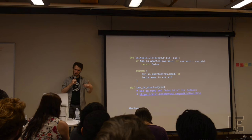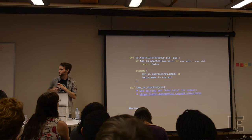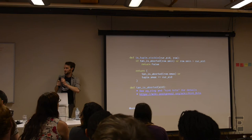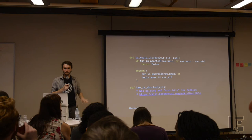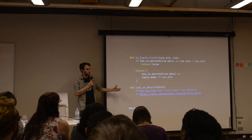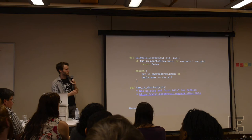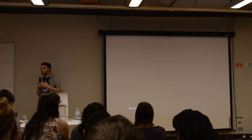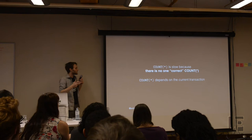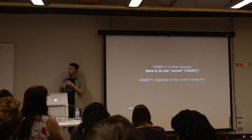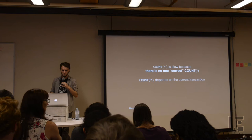And that's why COUNT(*) is slow. At any given time in the database, there isn't one correct COUNT(*). The count you would see is going to be different from the one I'd see. There's no general-purpose way the database can keep track of that to give you a faster, more correct number — it has to walk every row and evaluate visibility for your specific transaction context.